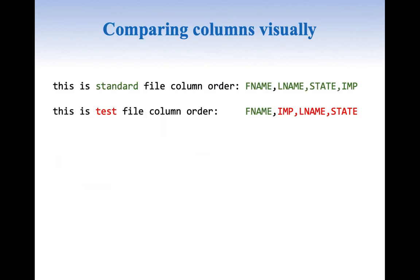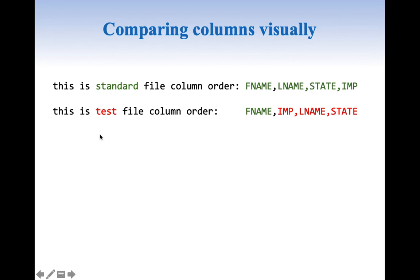Now let us look visually at how our standard file column order and our test file column order compare. The standard file column order for our SAS dataset is fname, lname, state, imp, whereas for our external file it is fname, imp, lname, state. I have color-coded them so you can see whenever there is not a match the color codes are very different. To conclude, we have captured column orders of our production dataset and external file and compared both of them — though so far we have done this visually only.